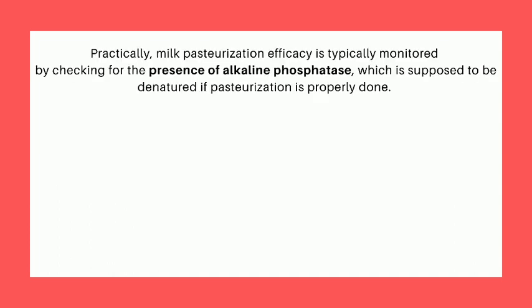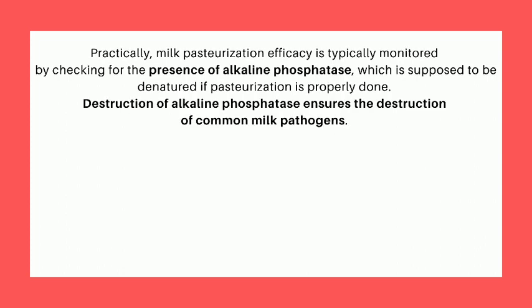Practically, milk pasteurization efficacy is typically monitored by checking for the presence of alkaline phosphatase, which is supposed to be denatured if pasteurization is properly done. Destruction of alkaline phosphatase ensures that the destruction of common milk pathogens has taken place.